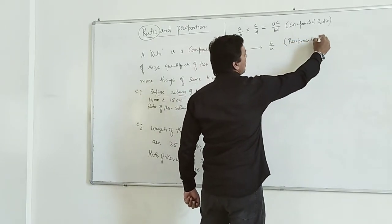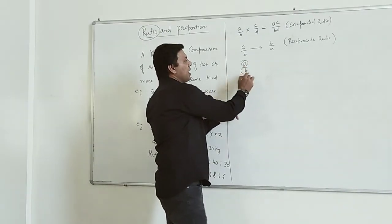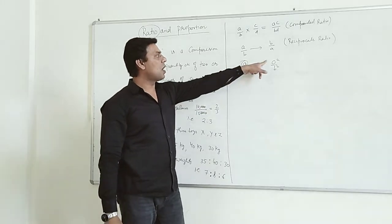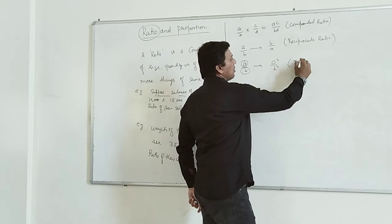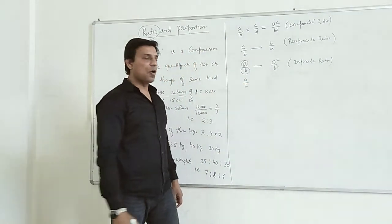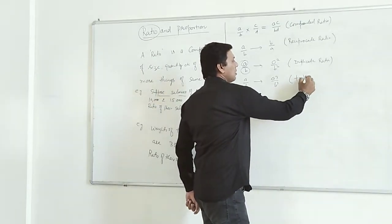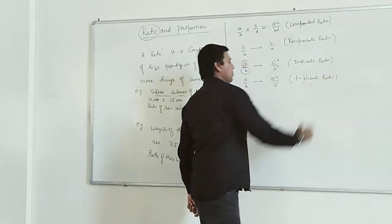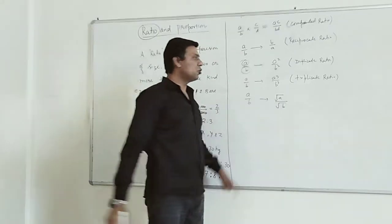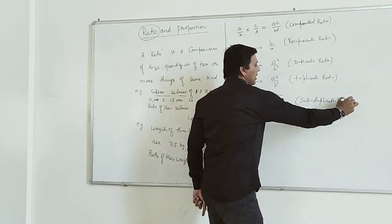Similarly, if we have main ratio A upon B and we are squaring both numerator and denominator, we will get A square and B square. This is called duplicate ratio. If we take the cube of both numerator and denominator, this is called triplicate ratio. And if we find the square root of both numerator and denominator, this is called sub-triplicate ratio.